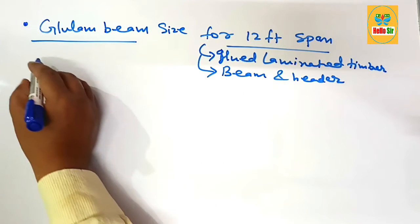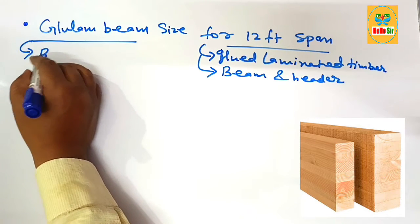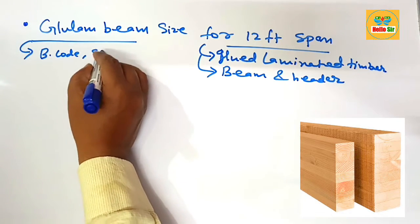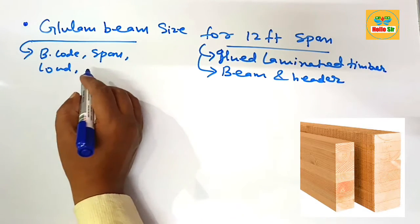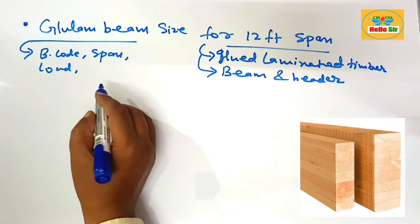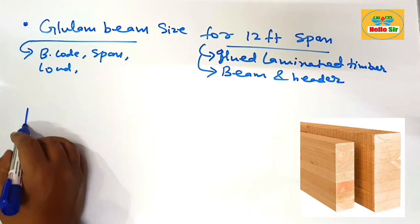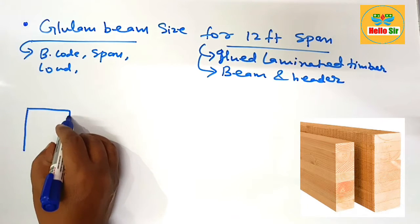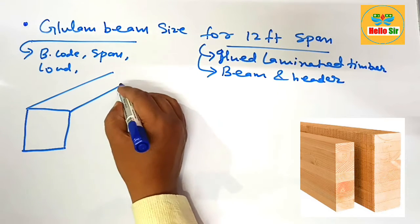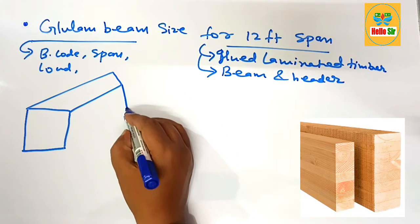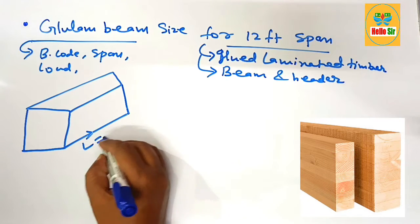First, you need to know the correct glulam beam size for a 12-foot span. The size of the beam depends on many factors like building code, the span length of the beam, load conditions, and specific requirements. Here we make a rough diagram to understand the different dimensions of the glulam beam.